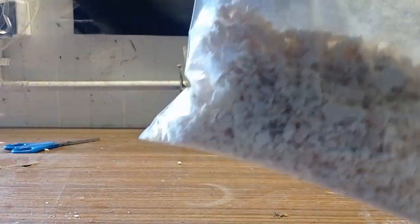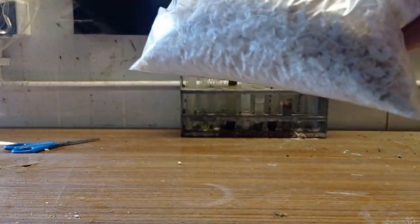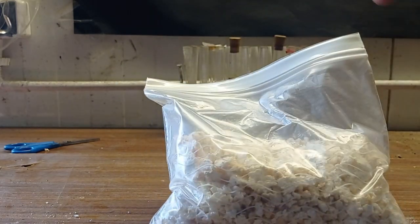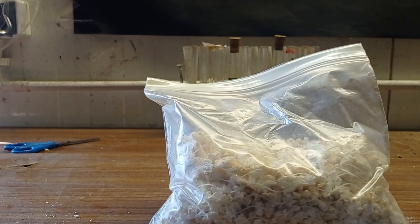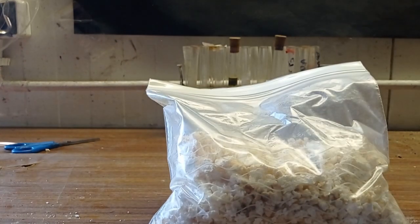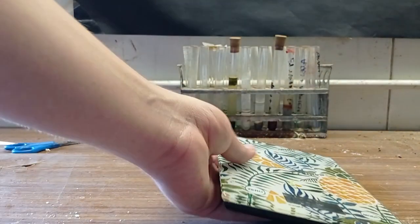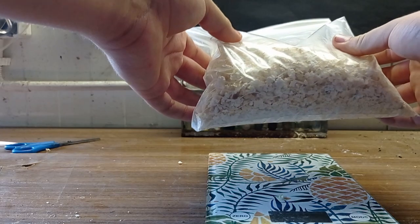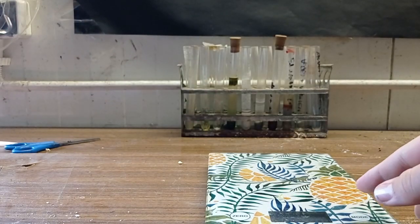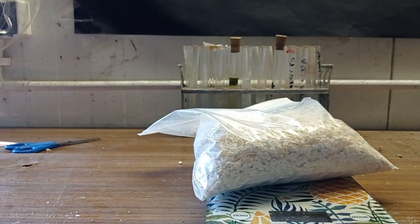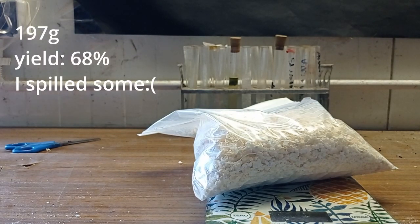Okay, so here's my bag of calcium acetate. As I said, that's still yellowish but it doesn't matter. And now I'll weigh it. 197 grams.